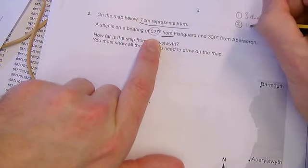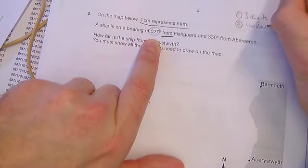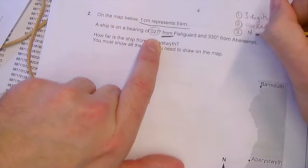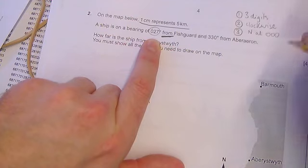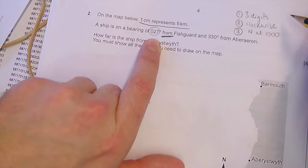You always measure clockwise. And you always start north at 000. Why have I said that as 000 rather than just 0? Because of the first point, it's three digits. So you don't just say 0, you say 000.